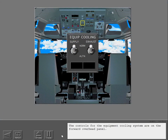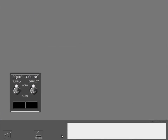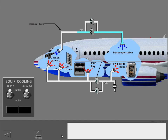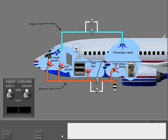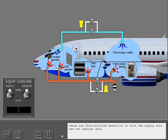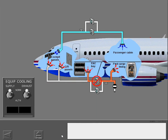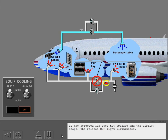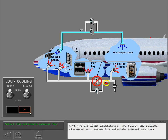The controls for the equipment cooling system are on the forward overhead panel. The supply switch operates the normal or alternate supply fan. The exhaust switch operates the normal or alternate exhaust fan. There are low air flow detectors in both the supply duct and exhaust duct. If the selected fan does not operate and the air flow stops, the related off light illuminates. When the off light illuminates, you select the related alternate fan.